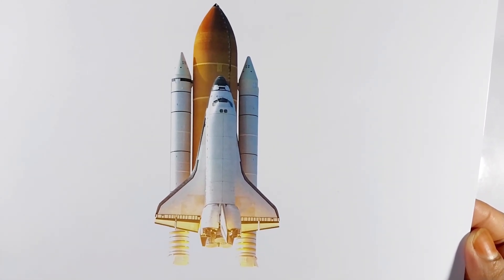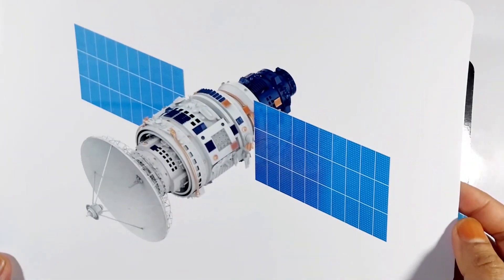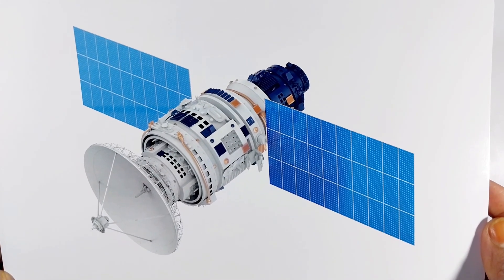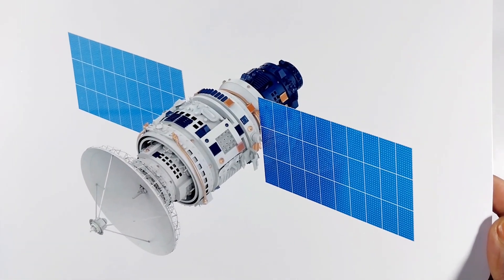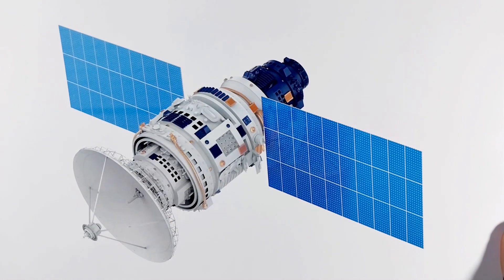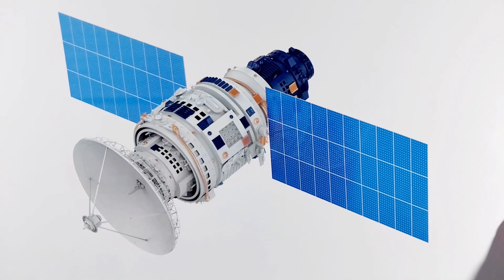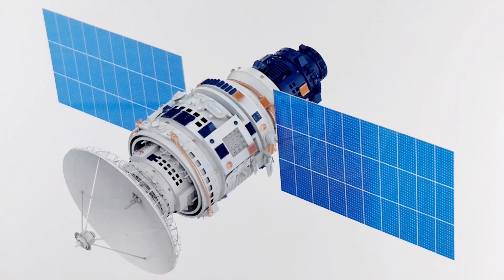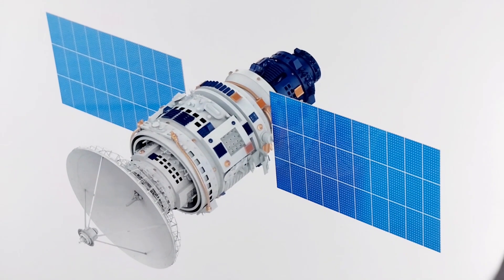Satellites are objects that orbit around planets, including Earth, to perform various tasks. They can be used for communication, weather forecasting, navigation, and scientific research. Satellites come in different sizes and types, from small cubesats to large geostationary satellites.